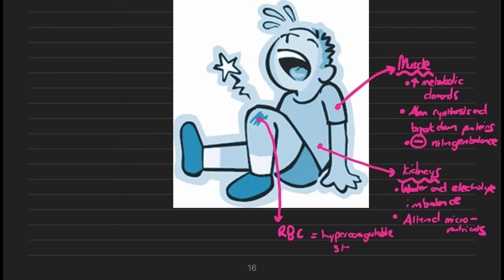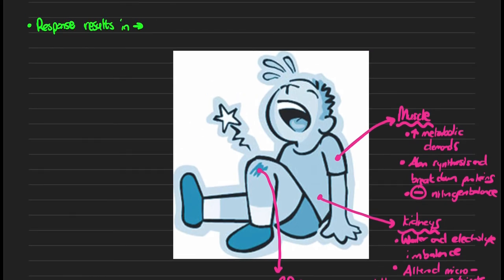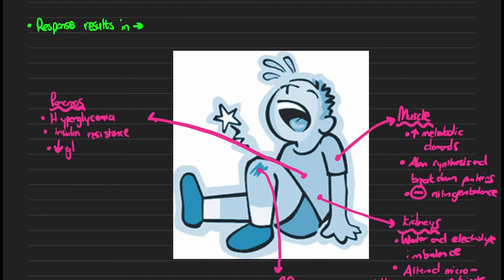Next we'll focus on the pancreatic region of the patient. Within this region we see our patients are typically hyperglycemic and have an insulin resistance. They also have a poor utilization of glucose as an energy source, diminished glycogen stores, and they're also hyperlipidemic, utilizing lipids as an alternative energy source.